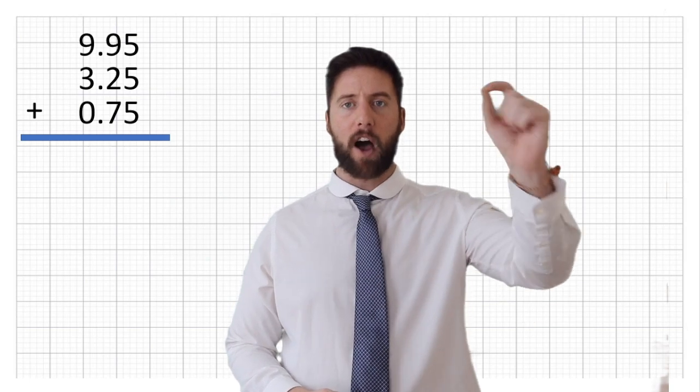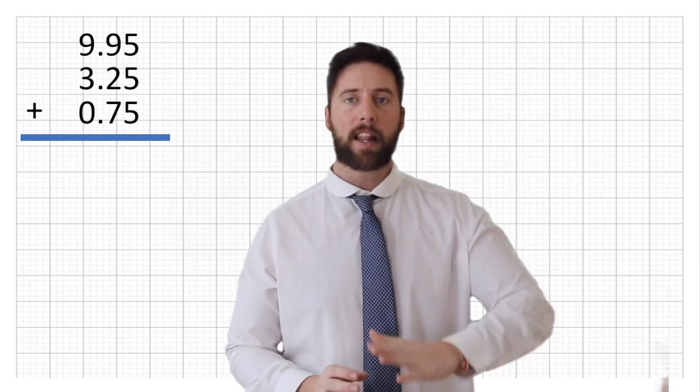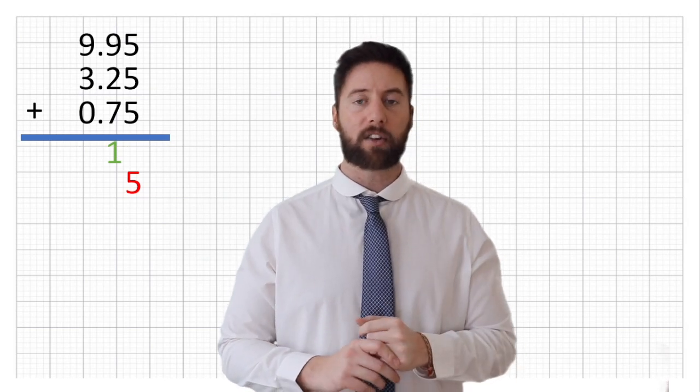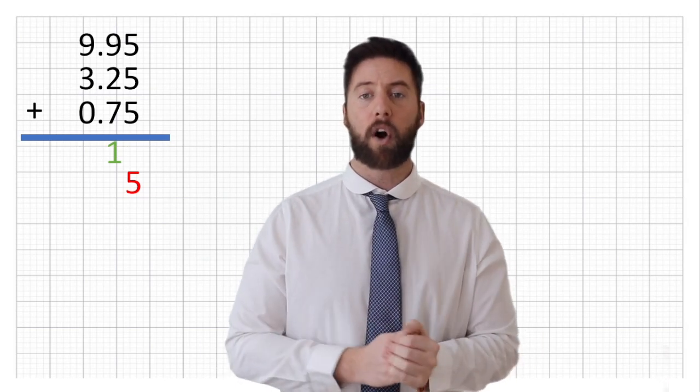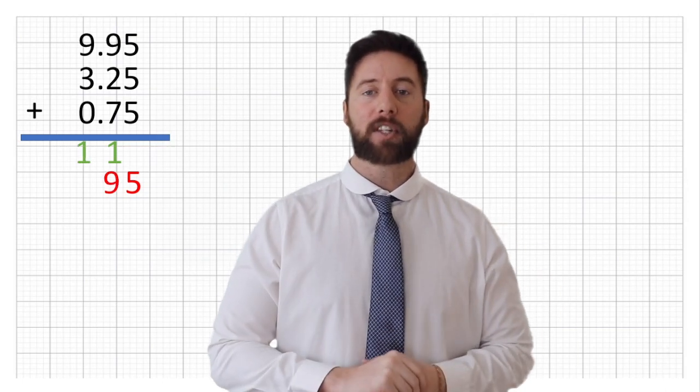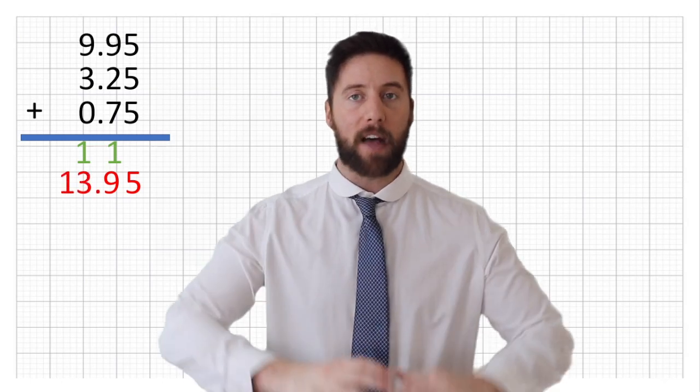Let's look at our smallest value first. I've got 5, add 5, add 5, gives me 15. Then my next column is 9, add 2, add 7, plus the one we've just added across from the previous column, gives me another one, gives me 19. Put that one into the next column. 9, add 3, plus that one is 13.